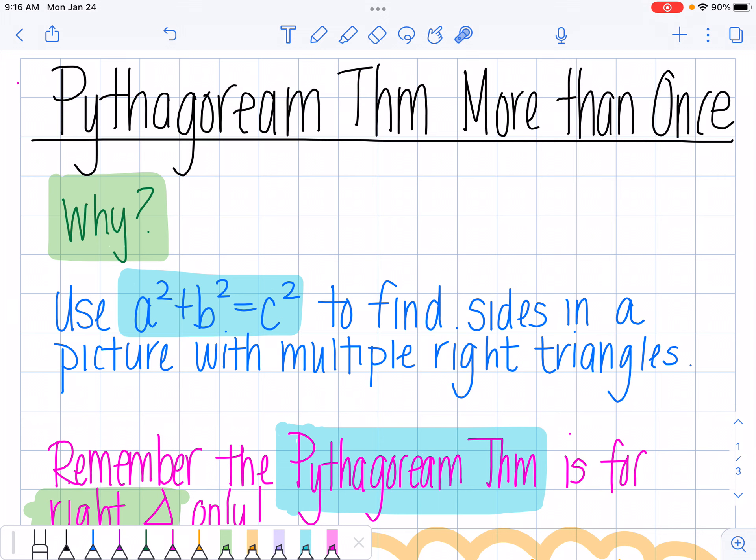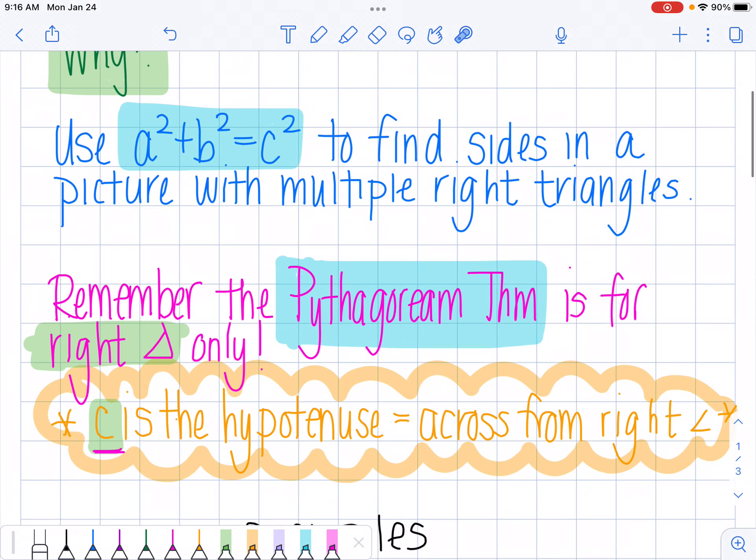So just as a reminder, Pythagorean theorem is a squared plus b squared equals c squared, where c, I wrote it down here, is your hypotenuse, which is the side that's across from the right angle. And the other reminder is Pythagorean theorem is only used for right triangles, which means it has to have a right angle in your triangle.